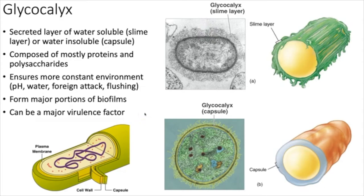Now let's talk about outer structures before we get to the cell wall. Fimbriae are long protein extensions that make the bacteria look like a porcupine — their job is generally to allow the bacterium to stick to surfaces. Sex pili are sometimes lumped with fimbriae but they are not the same thing; sex pili tend to be longer.